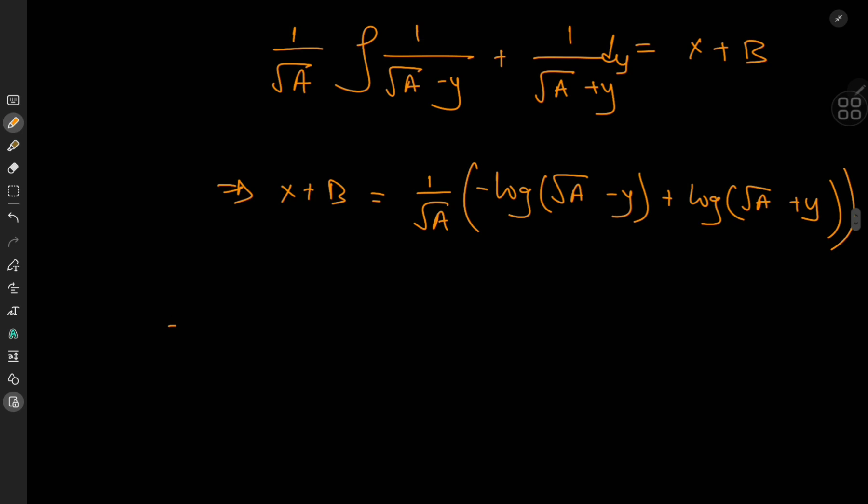So using the properties of the logarithm, we can write these as one term. So we have one by root a times the logarithm of root a plus y divided by root a minus y, minus or plus whatever you can absorb the minus sign into the constant of integration b.